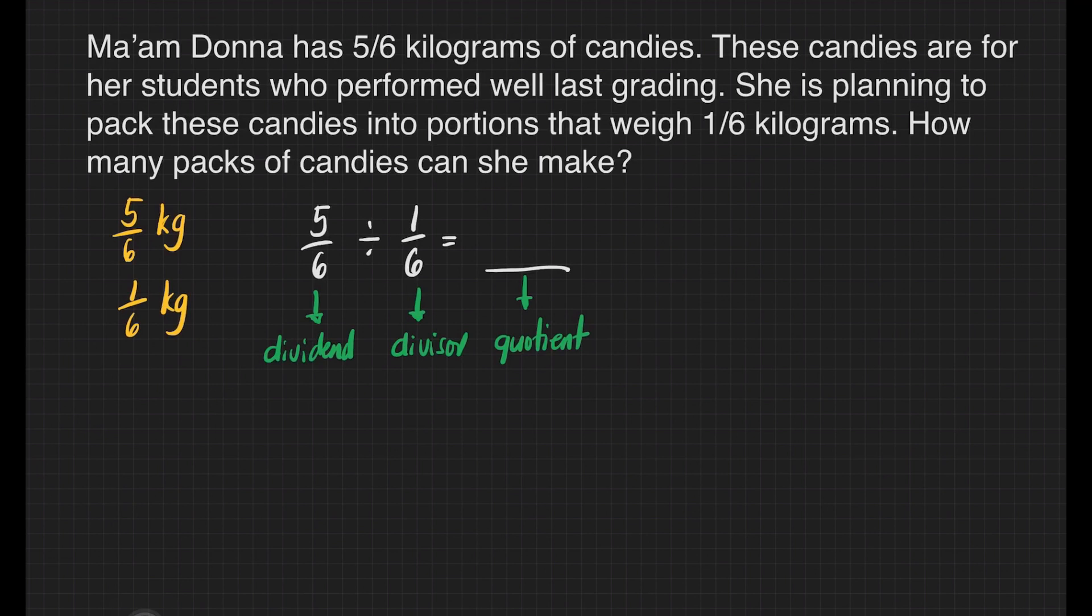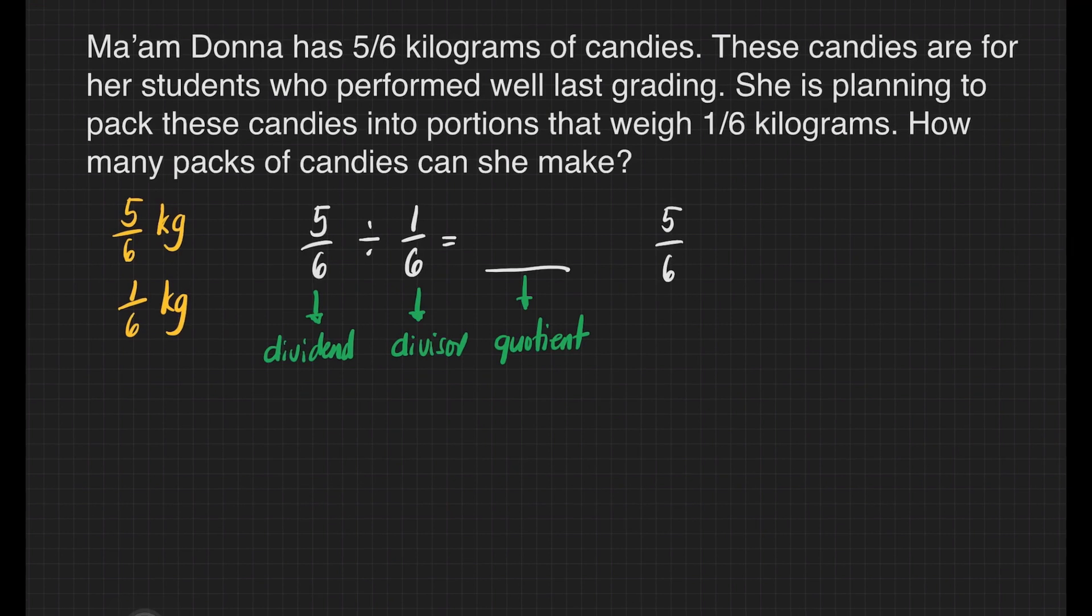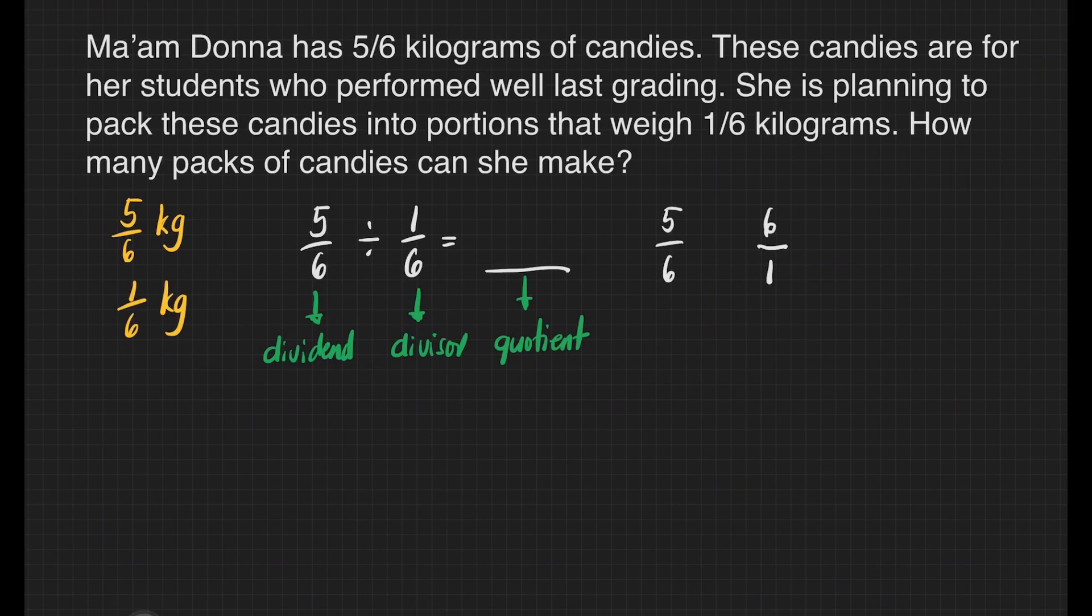In dividing fraction by another fraction, we follow some steps in order to arrive at the correct answer. The first step is to copy our dividend. Let's copy 5/6. Next, change our divisor to its reciprocal. How to get the reciprocal? Just interchange the denominator and the numerator of the given fraction. So if we have 1/6, this will become 6/1 because we just interchange the denominator and the numerator. The next step is to multiply these two fractions. But before anything else, let's check our fractions.